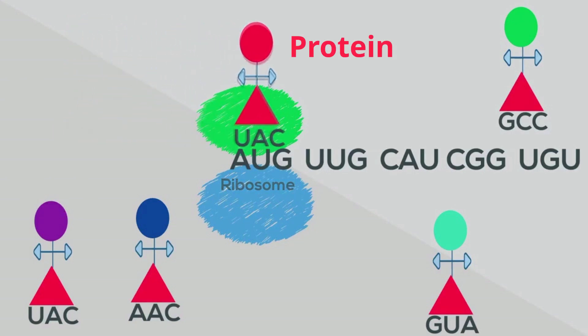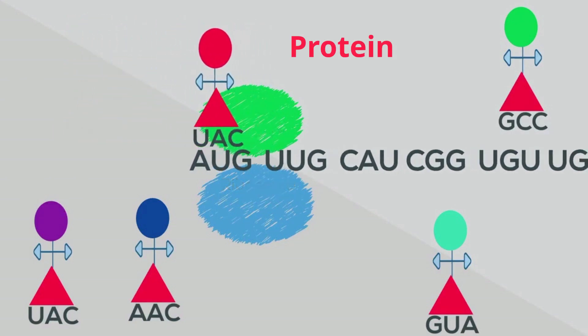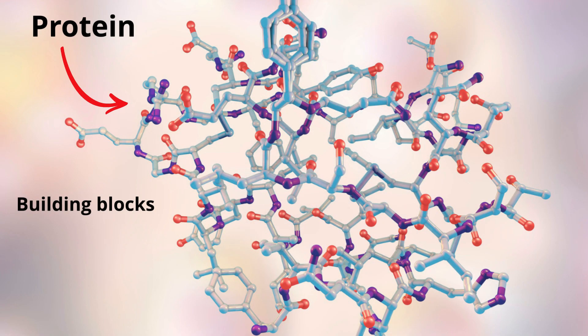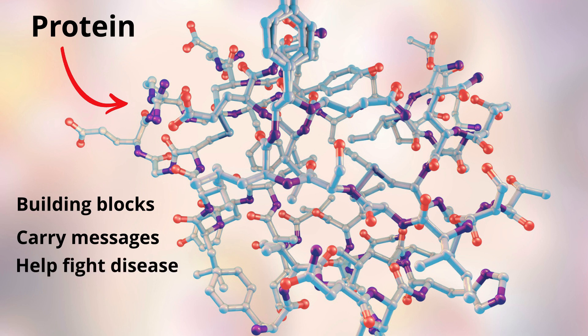Proteins play several important functions in the cell, such as being building blocks for building structures, carrying messages throughout the cell in the form of hormones. They also help fight disease in the form of antibodies, and are also enzymes that speed up chemical reactions.